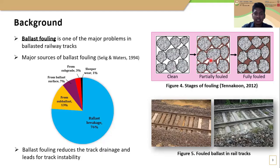Also, after a certain period of time, the voids are completely filled by the fines and it can be identified as a fully fouled ballast layer. The major sources of ballast fouling are ballast breakage, inclusion of fines from sub-ballast, sub-grade and ballast surface, as well as fines from sleeper wear. Ballast fouling dramatically reduces the track drainage as shown in these figures and that leads to track instability.